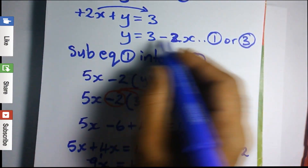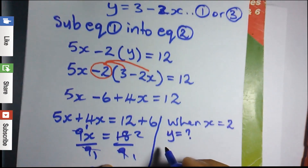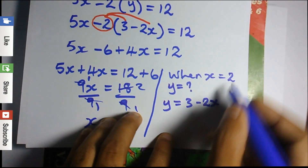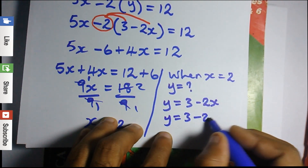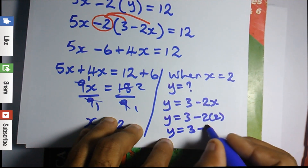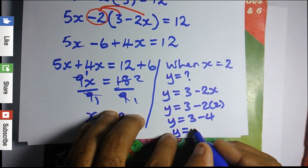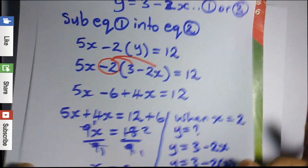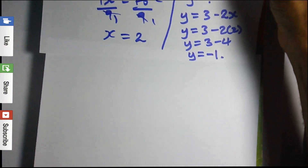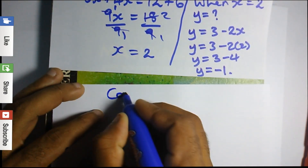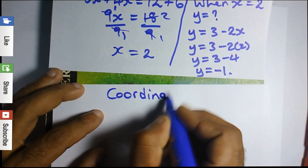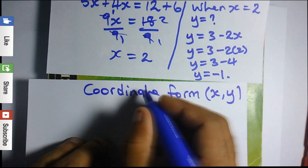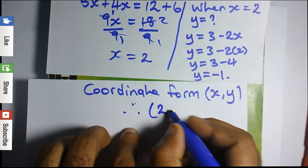When X equals 2, Y is still unknown. Remember up here, Y was equal to 3 minus 2X. So Y is equal to 3 minus 2 times 2, which is 3 minus 4, so Y is equal to negative 1. We could also represent our solution in coordinate form, putting the X value before the Y value, so our solution for the simultaneous equation would be (2, -1).